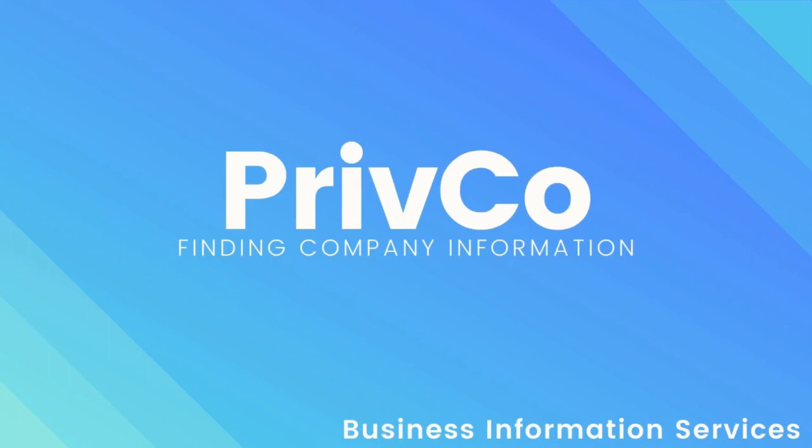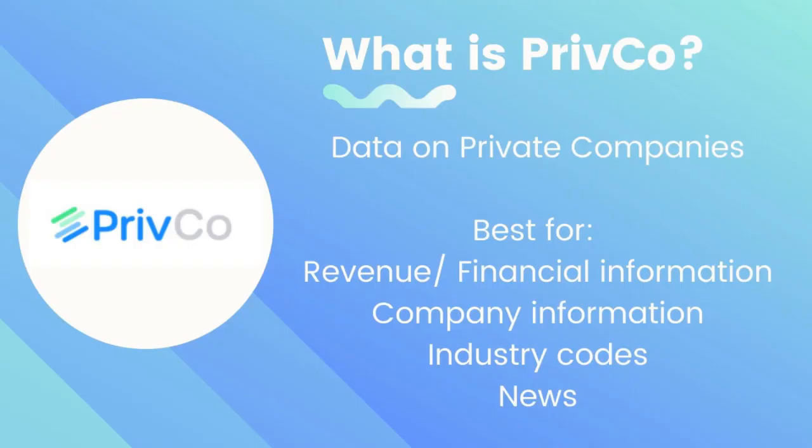Welcome to our video on how to find company information using the database PrivCo. PrivCo contains data on over 650,000 US market companies. It is best for finding revenue and financial information, company information, industry codes, and news.